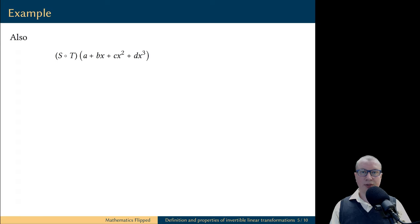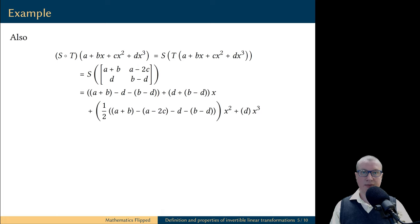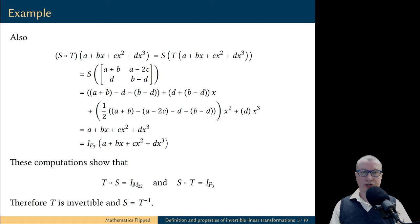Next, let's compute the composition in the other direction: s composed with t applied to an input polynomial. This is s of t of the polynomial. We know what t does to an input polynomial, and we also have an explicit formula for s, so we know what s does to an input matrix. The result is a polynomial. A trivial algebraic computation simplifies this polynomial to the original input. Therefore, s composed with t is the identity transformation on the vector space of polynomials of degree at most 3. This shows that both compositions result in identity transformations on the respective vector spaces. Therefore, t is an invertible linear transformation and the given function s is its inverse.